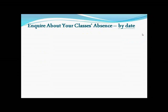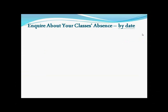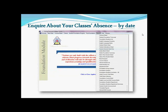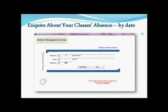What if you'd like to inquire about your class's absence by date? That is another feature on the college system. In the same Foundation Module, go to Reports this time and click on Student Absence Date Wise. Another screen will pop up where you need to select the right semester — for example, I entered 31 for this semester — and then the level: level one, two, three, or four, and then the group. After that, hit the Run Report button.